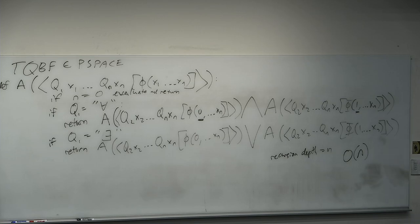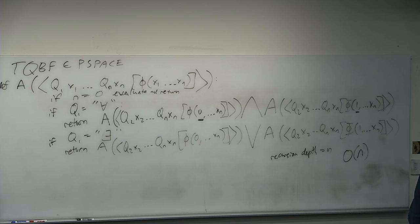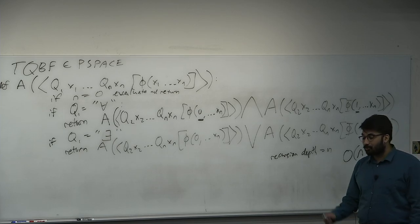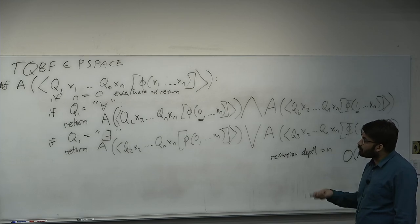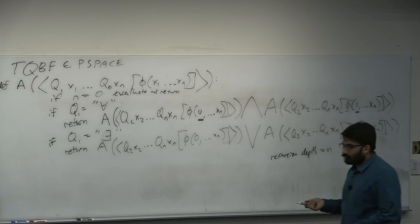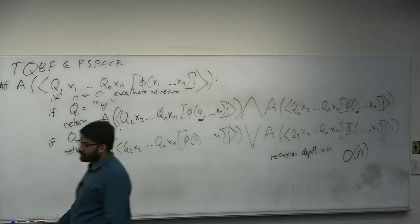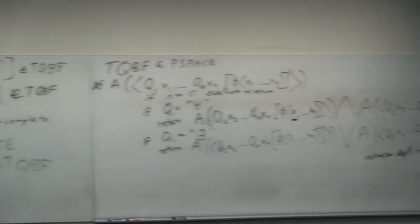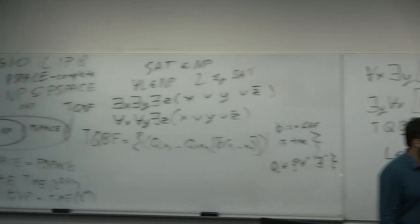This construction will come up again — this is the second time we've done a recursive divide-and-conquer on a space complexity problem. Proving TQBF is in PSPACE is harder than proving SAT was in NP. Now let's get to the reduction. The reduction will work similarly to the Cook-Levin theorem, except done in a creative way — the Cook-Levin style reduction is going to fail for us.